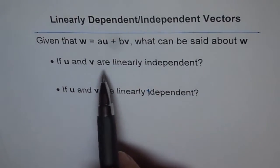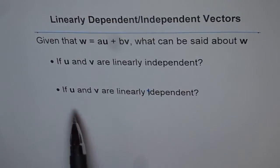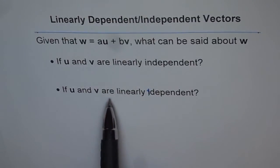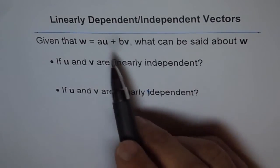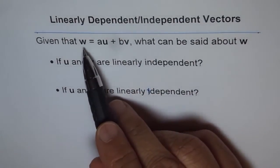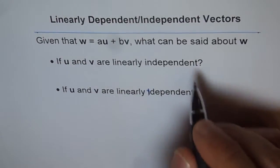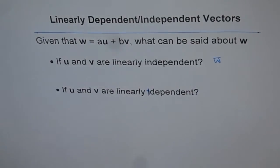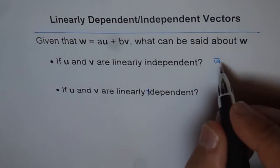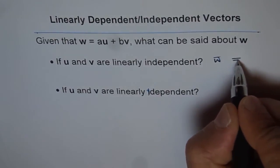If u and v are linearly independent, then w is a vector which is not equal to 0. So if they are independent, then the vector w is not equal to 0.